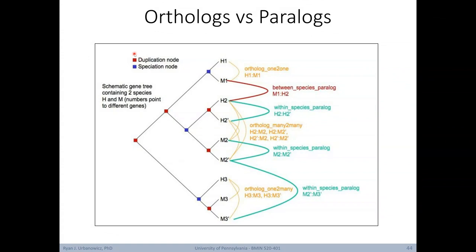Here's an illustration trying to depict the difference between orthologs and paralogs. Red squares indicate a duplication node, while blue squares indicate a speciation node. At the top, we have a speciation event where H1 and M1 are homologous genes in these two different species. These genes were said to be orthologs. Below it, we have a duplication event, where a homologous gene is duplicated within the same genome, i.e. the same species. These genes are considered paralogs.